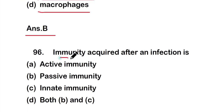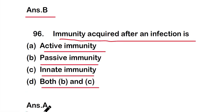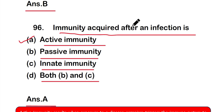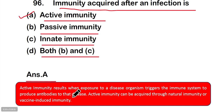Question number 96: Immunity acquired after an infection is — option A: active immunity, option B: passive immunity, option C: innate immunity, or option D: both B and C. The right answer is option A — active immunity. Active immunity results when exposure to a disease organism triggers the immune system to produce antibodies, either through natural infection or vaccine-induced immunity.